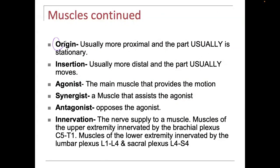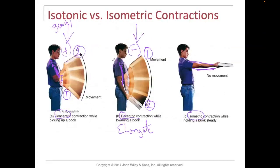Origin is usually the more proximal part and typically the part that's staying still, whereas the insertion is the more distal part and usually the part that moves. So the origin stays still, and it's the radius — the insertion — that's actually moving, whether it be an eccentric or concentric contraction.